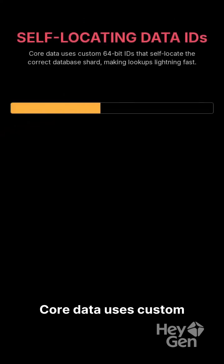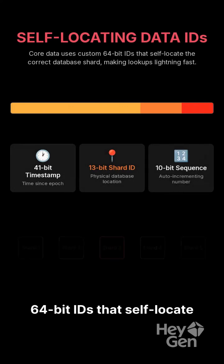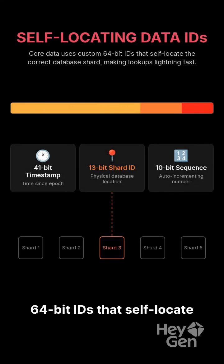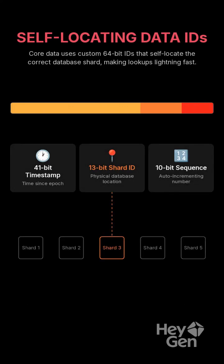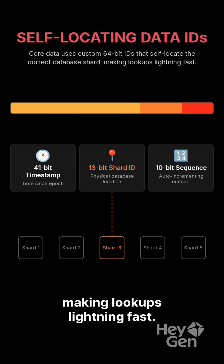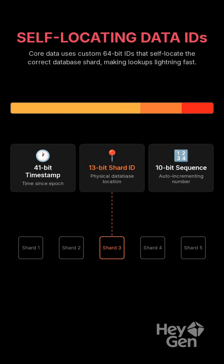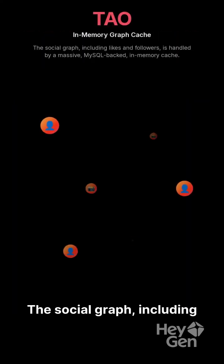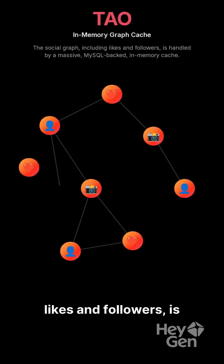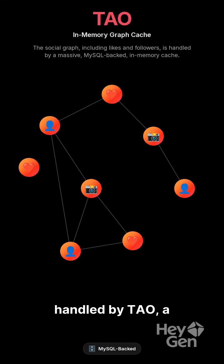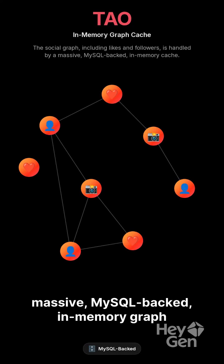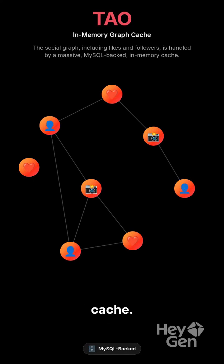CoreData uses custom 64-bit IDs that self-locate the correct database shard, making lookups lightning fast. The social graph, including likes and followers, is handled by TO, a massive MySQL-backed in-memory graph cache.